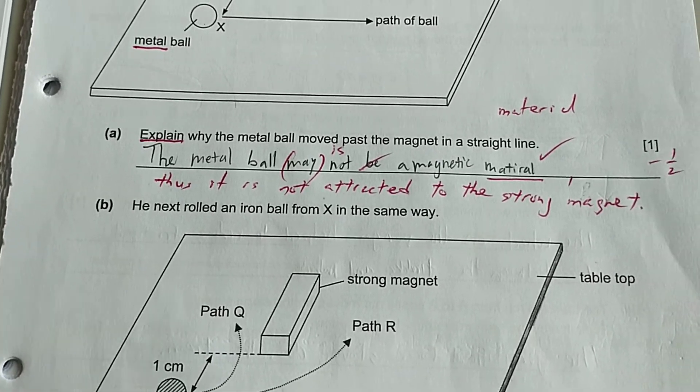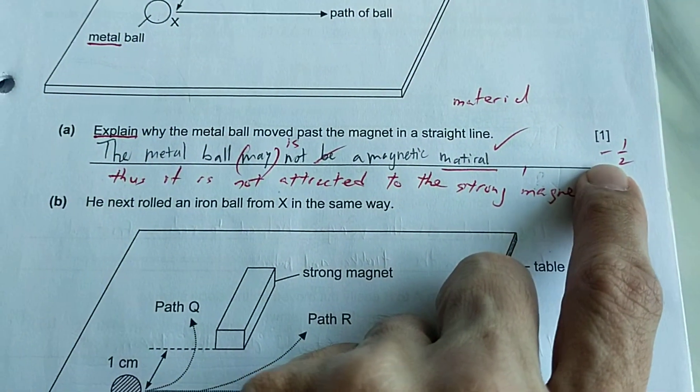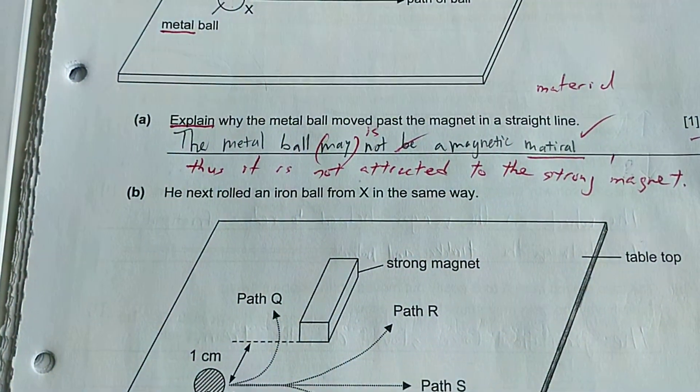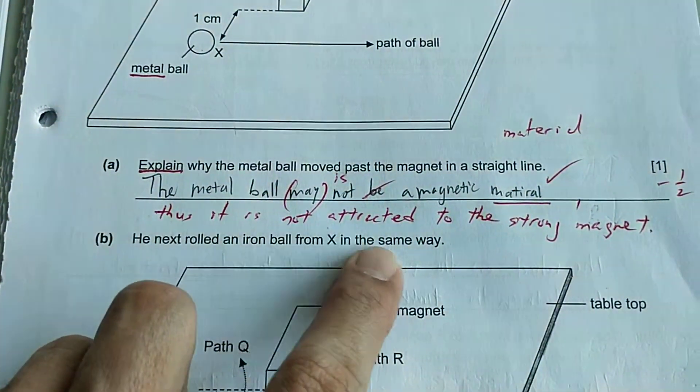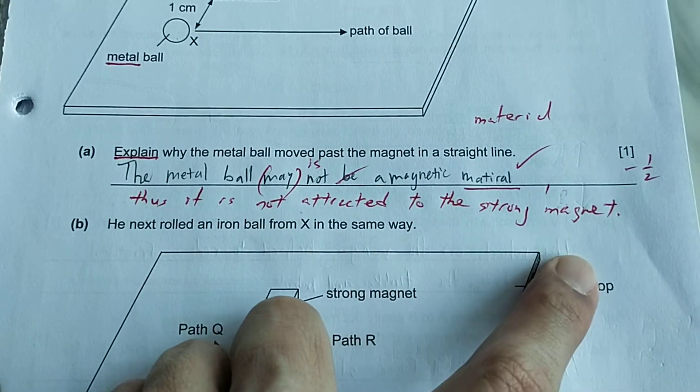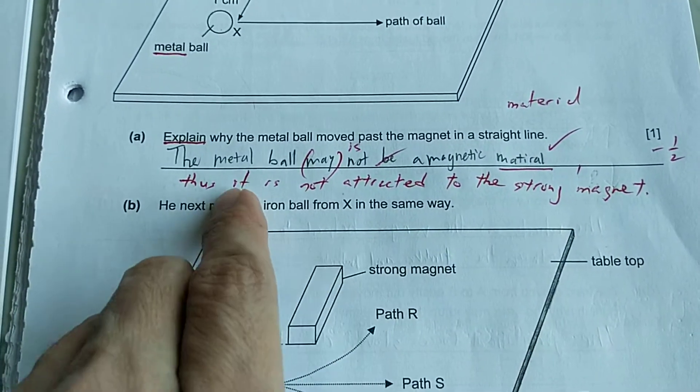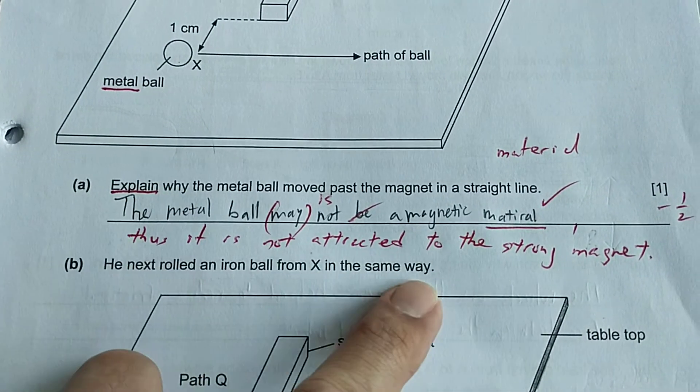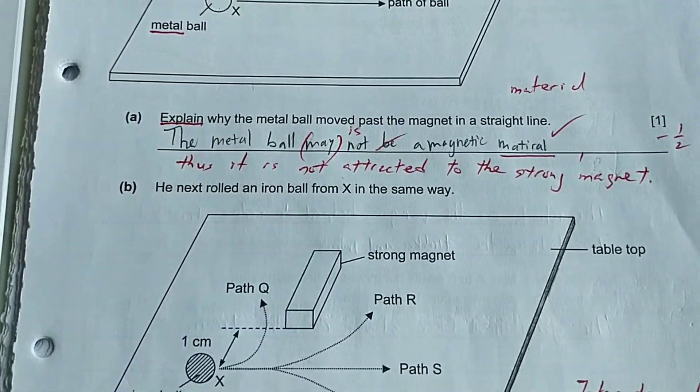But you see the student actually lost half a mark because the student did not explain. So non-magnetic means what? It means it will not be attracted to the strong magnet. So it is important to give the reason because whenever you see the word explain you have to give the reason.